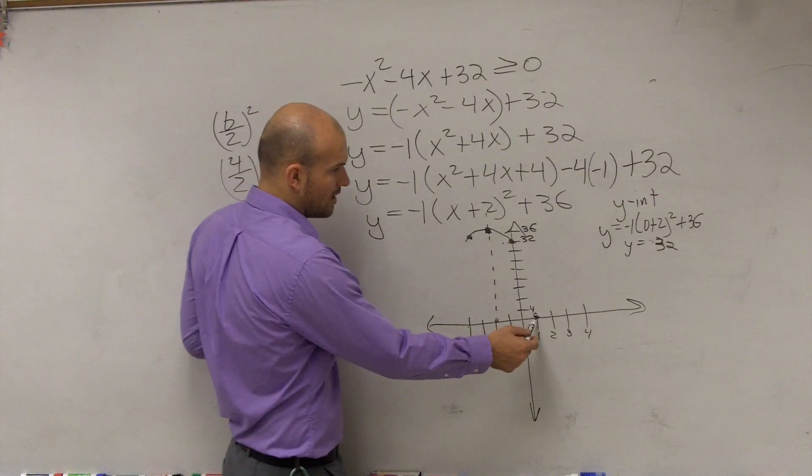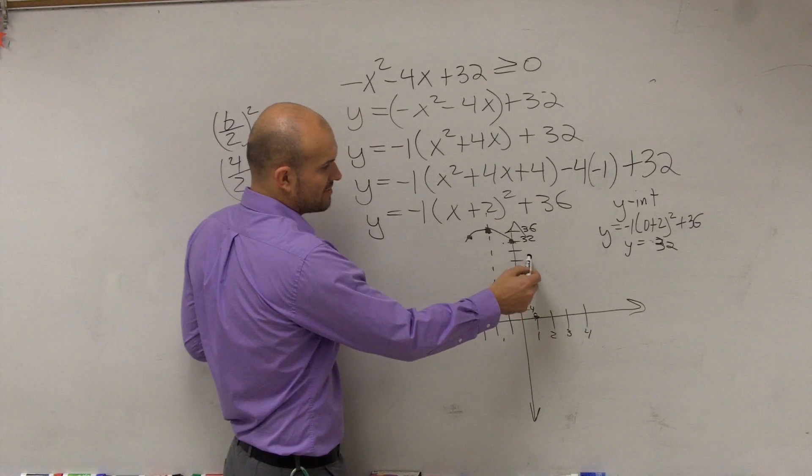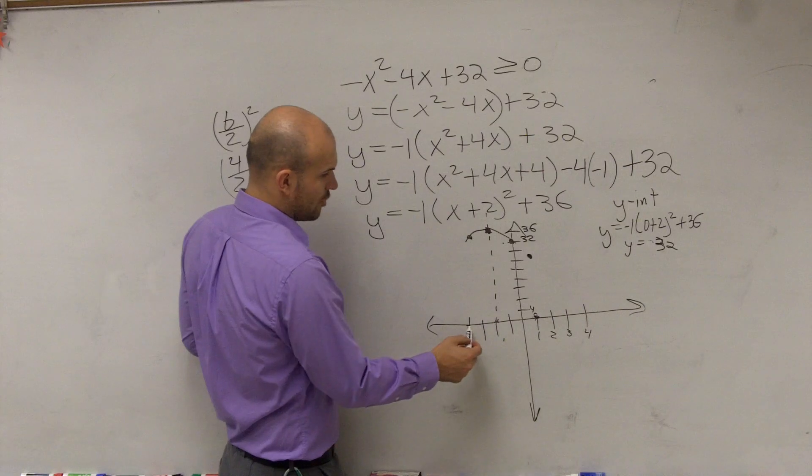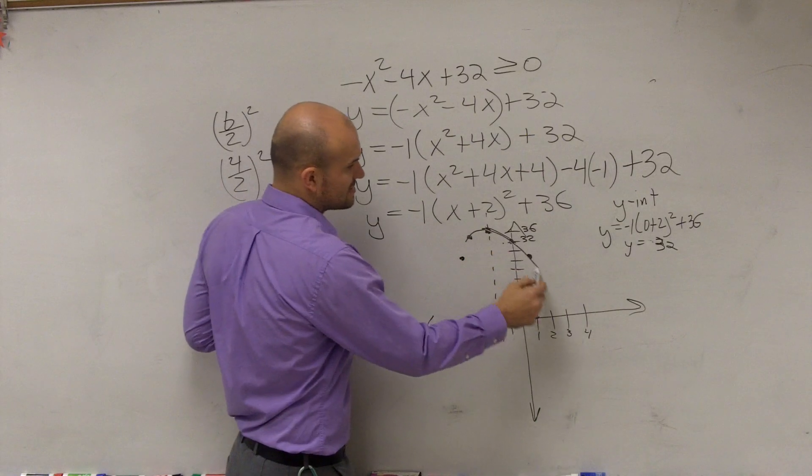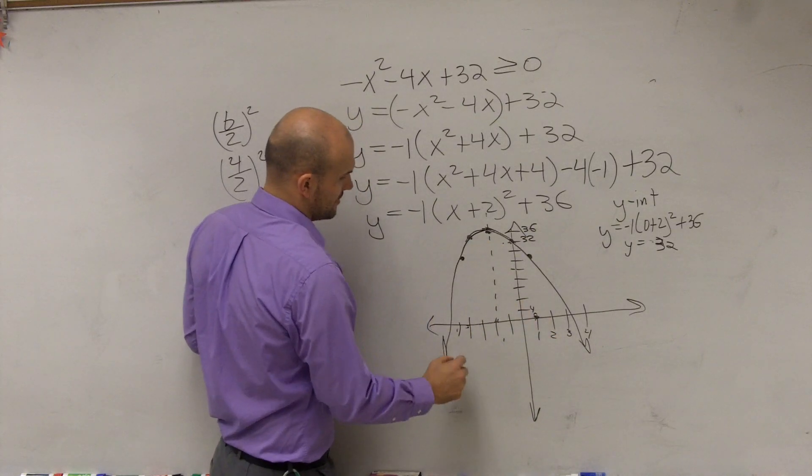So over at 1, I could say my graph's going to be roughly around 27. Go over one more. It's going to be roughly around 27. So you guys can see my graph is kind of taking the shape like this.